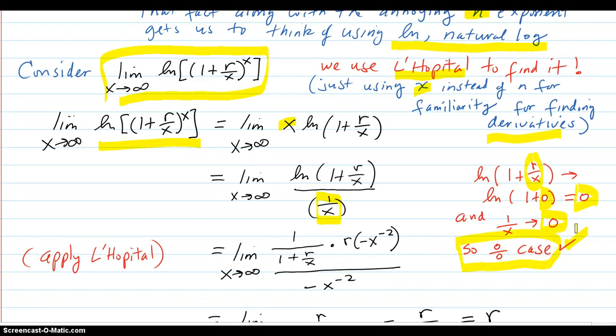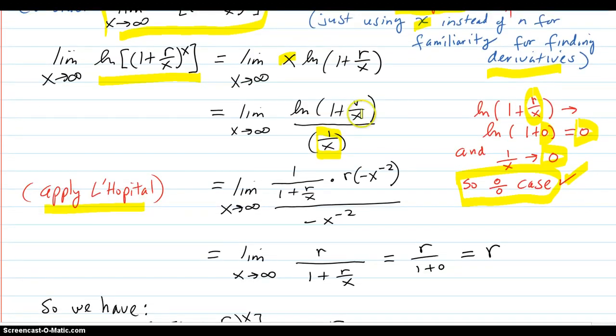So now we can apply L'Hopital's rule. So the derivative of the numerator is 1 over the function times the derivative of the function. Derivative of 1 plus r over X. Well, the derivative of 1 is 0, so I just have r times 1 over X. And I think you can see that r is a constant.